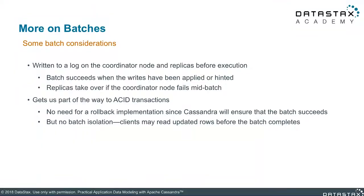When a client sends a batch to a coordinator node, the first thing the node does is save the batch into a special log — both on that coordinator node as well as on several replica nodes. This ensures that if the coordinator fails during execution of the batch, it can replay the batch again when it becomes available. If for some reason the coordinator is not able to replay the batch, then one of the replicas will take over the responsibilities of executing the batch instead. Once saved in the batch log, the coordinator will attempt to execute the write operations. The batch operation only succeeds once all write operations succeed, with changes either being applied or hints being saved on the replica nodes.